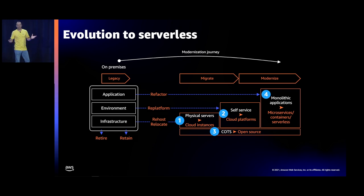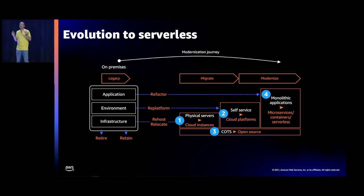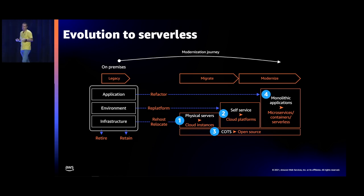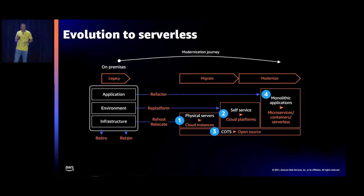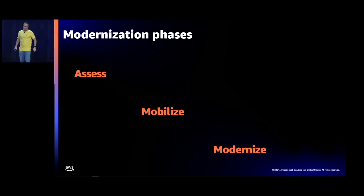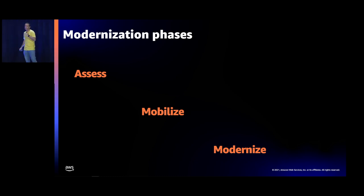What is the evolution to serverless? We use a two-step approach: first migrate, then modernize. It's much easier to modernize an application if it's already running on AWS. In the first leg, you migrate using patterns like re-host, relocate, or re-platform — for example, migrating from a legacy Unix OS to Linux. Once your application is running on AWS, it's time to modernize using patterns like re-platform or refactor. In AWS, we follow a three-phase modernization approach: assess, mobilize, and modernize.